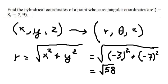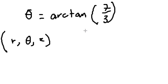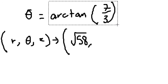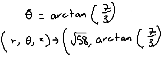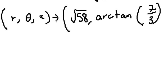Now we put r, theta, and z together. We get square root of 58, arctan of seven over three, and z, that's number nine.